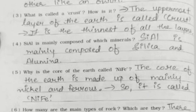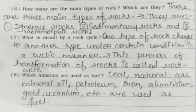Fifth: What is the core of the earth called? NIFE. The core of the earth is made up of mainly nickel and ferrous, so it is called NIFE. Sixth: How many main types of rock are there? There are three main types of rocks: igneous rocks, sedimentary rocks, and metamorphic rocks. Seventh: What is meant by a rock cycle? One type of rock changes to another type under certain conditions in a cyclic manner; this process of transformation of rocks is called rock cycle.